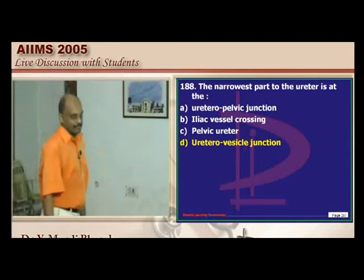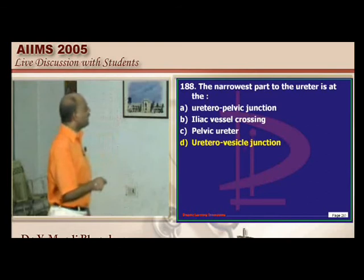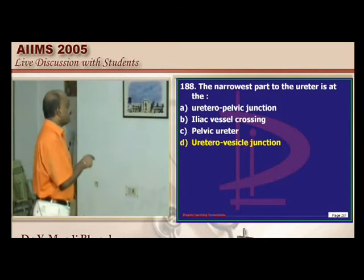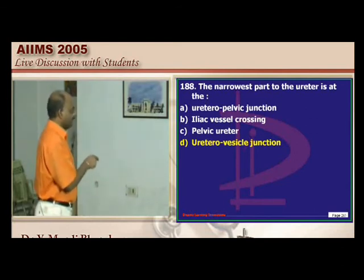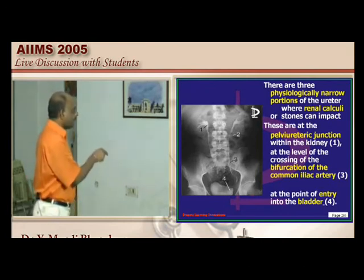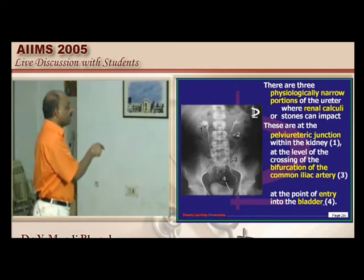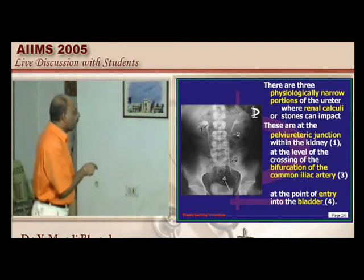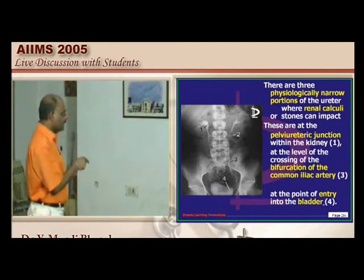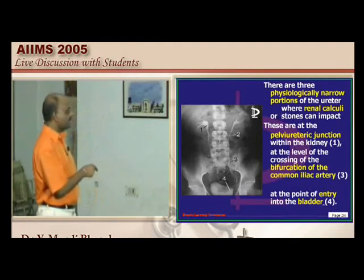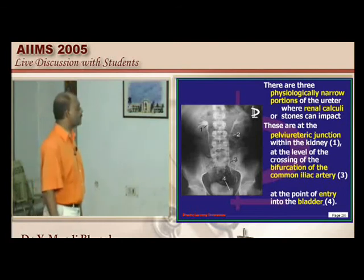The ureter has four important narrowing sites: (1) the pelvic-ureteric junction, (2) at the bifurcation of the common iliac artery — where the iliac artery overrides it, creating a risk of ureteric injury during gynecological surgery, (3) the entry point into the bladder — the most constricted and narrow site.